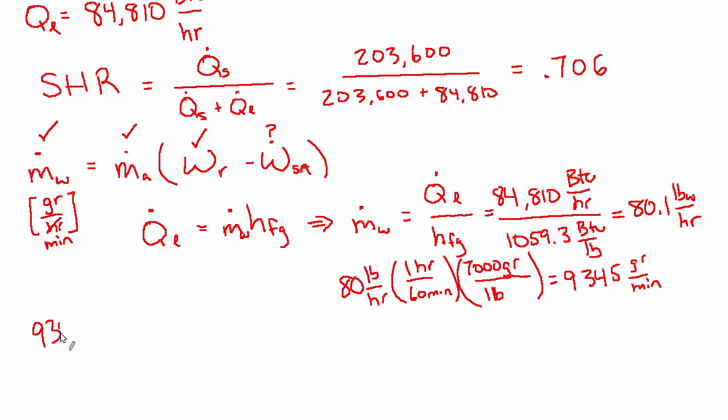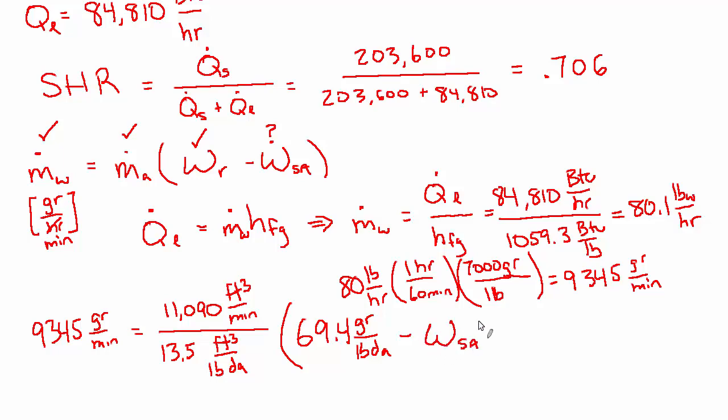Let's substitute into this equation. So 9,345 grains per minute equals the mass flow rate of air, which is 11,090 cubic feet per minute. I'll write it this way since we want to see the units cancel. And now we want to change that into pounds of dry air per minute, so we'll divide by the specific volume. And I'm just using this as a typical value—13.5 cubic feet per pound of dry air. I didn't even bother to look at the psych chart, it's just kind of a typical number, but you could probably be more precise here by looking up the exact room conditions. And then we're going to multiply that by the difference in the humidity ratios. The humidity ratio that is associated with a room that's 77 degrees dry bulb and 50% humidity from the psych chart is 69.4 grains per pound of dry air, minus the humidity ratio of the air being supplied, which we don't know. That's what we want to know.